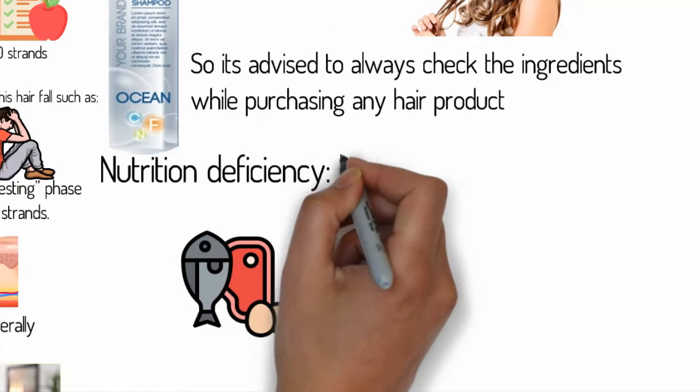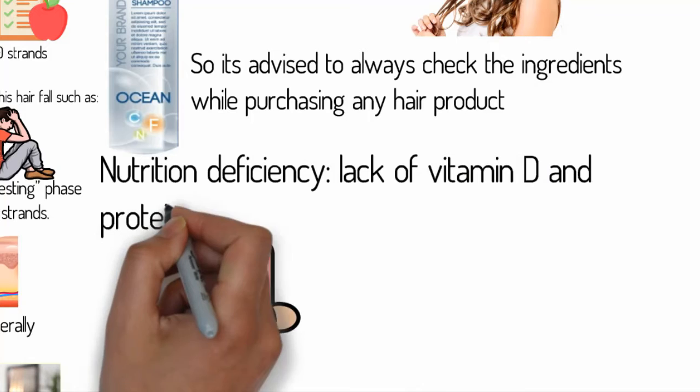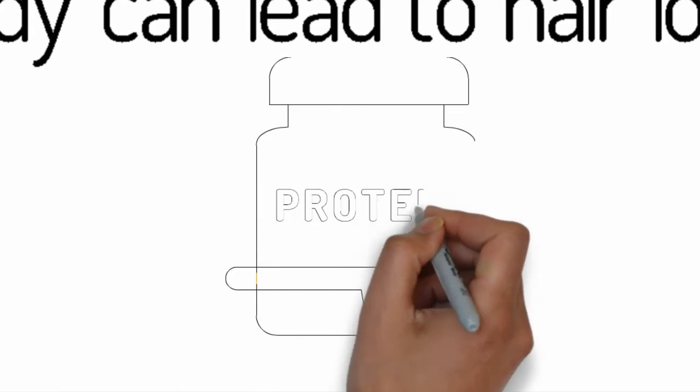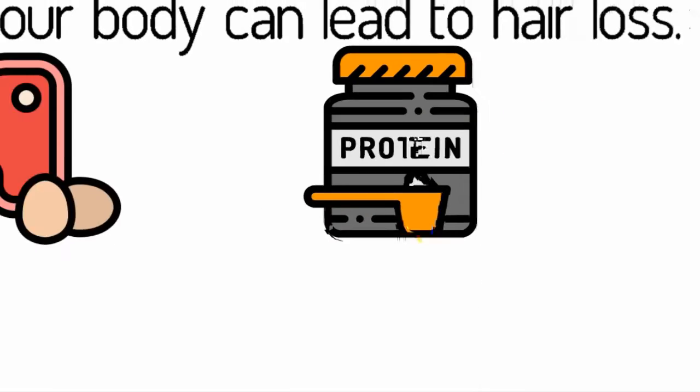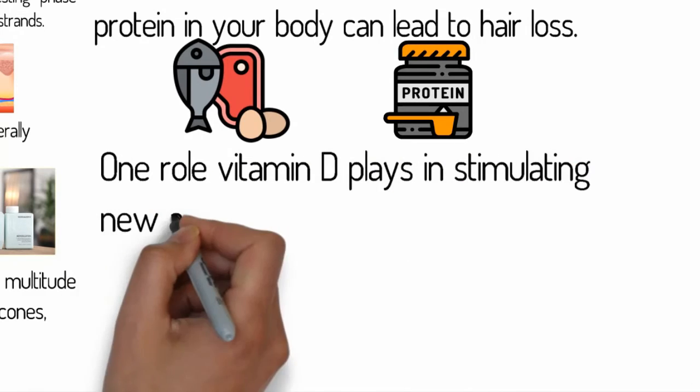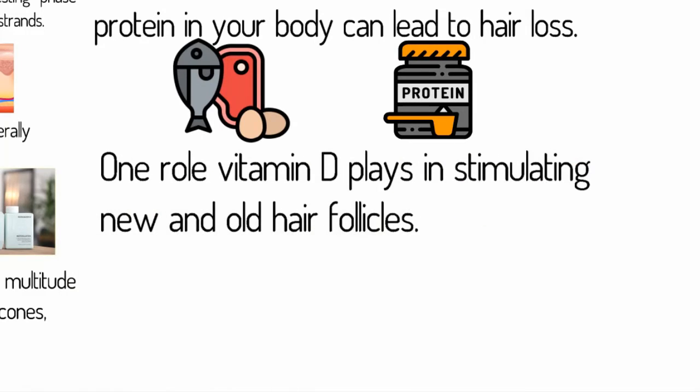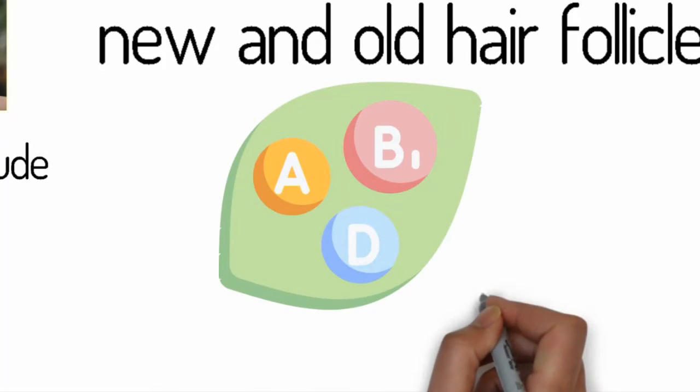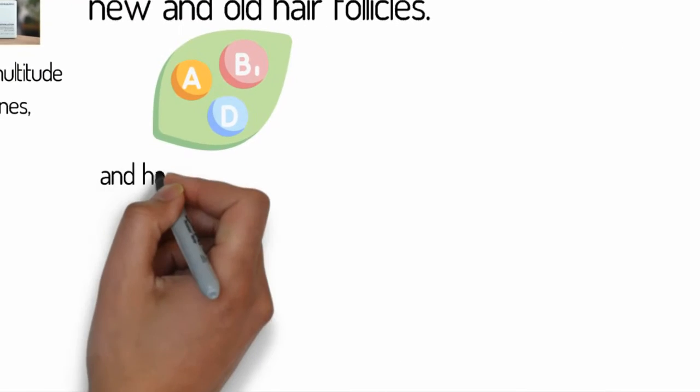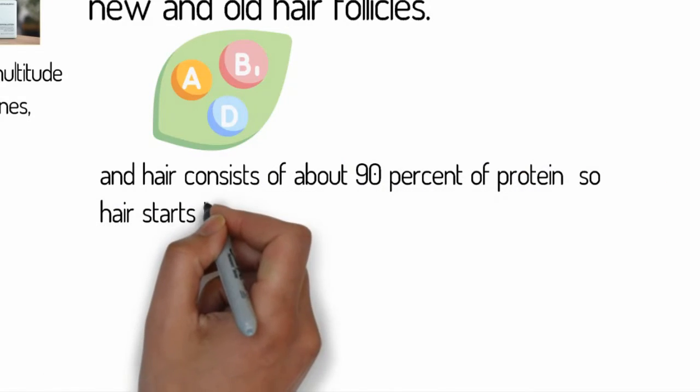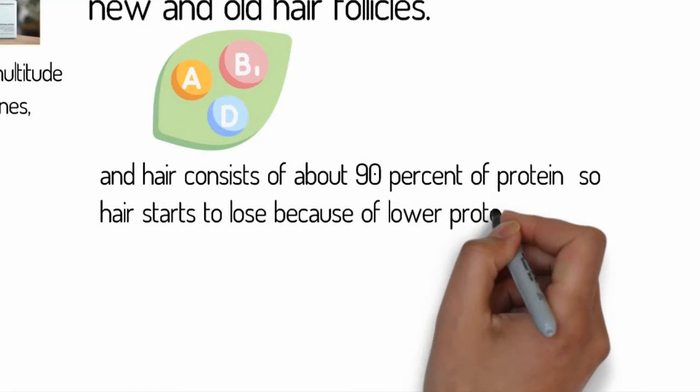Nutrition deficiency: Lack of vitamin D and protein in your body can lead to hair loss. One role vitamin D plays is stimulating new and old hair follicles. And hair consists of about 90% protein, so hair starts to fall because of lower protein intake.